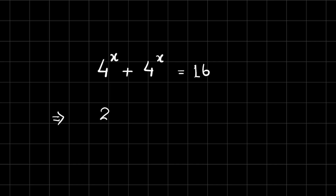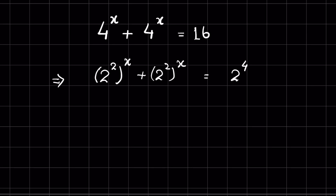We can write 4 as 2 raised to the power 2, so the expression becomes 2 raised to the power 2 whole raised to the power x, plus 2 raised to the power 2 whole raised to the power x, equal to 16, which we can write as 2 raised to the power 4.